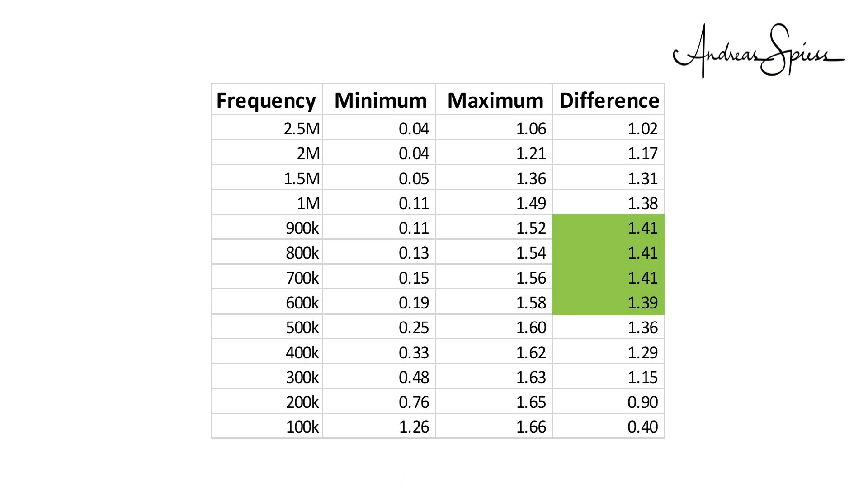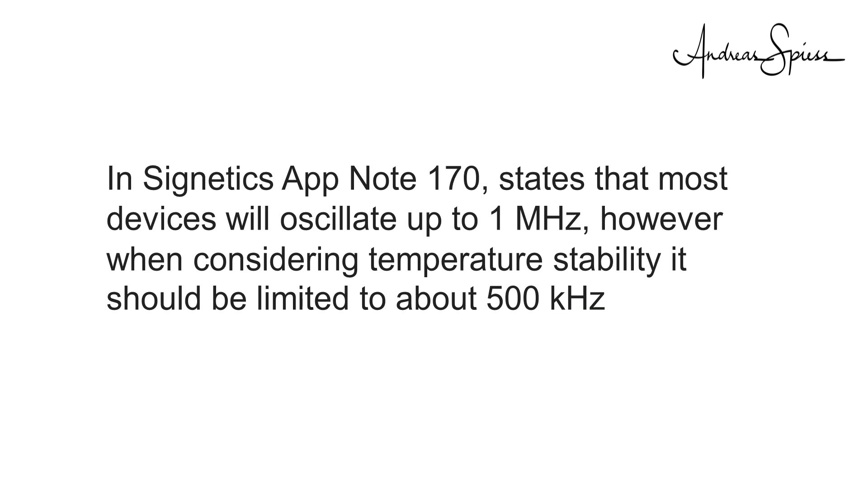Here you see the effect of frequency on the range of the sensor. The biggest difference between no water and fully submersed results with frequencies around 600 to 900 kHz. The frequency used by these sensors is about 570 kHz, because an NE555 cannot do much more.